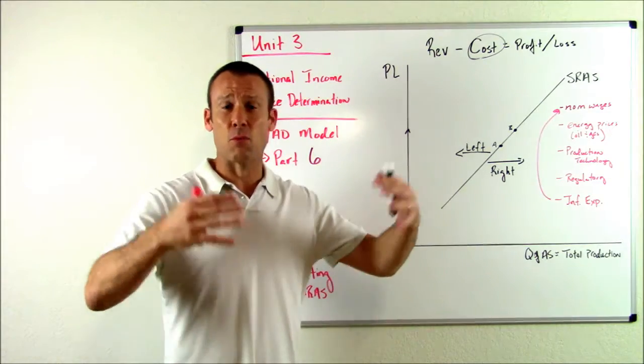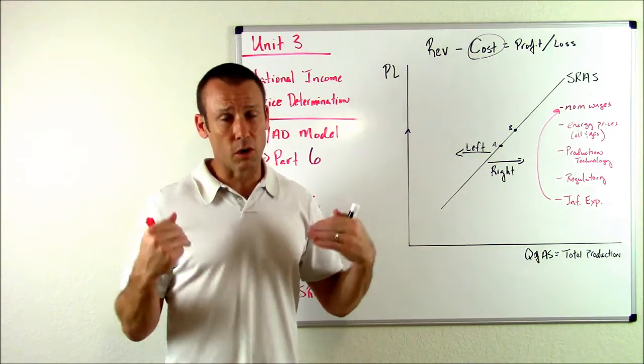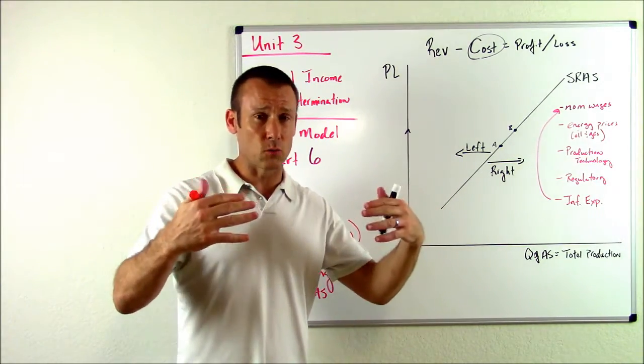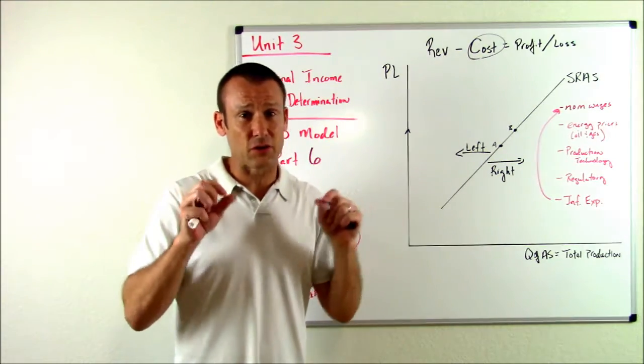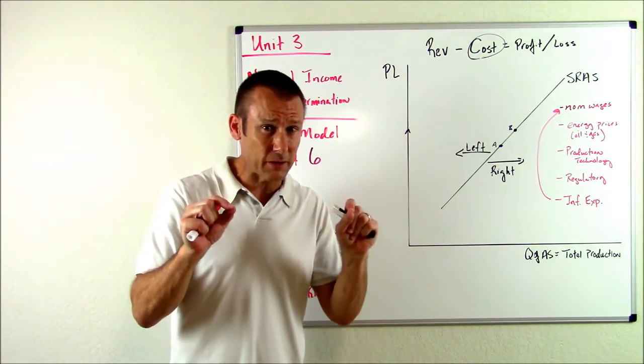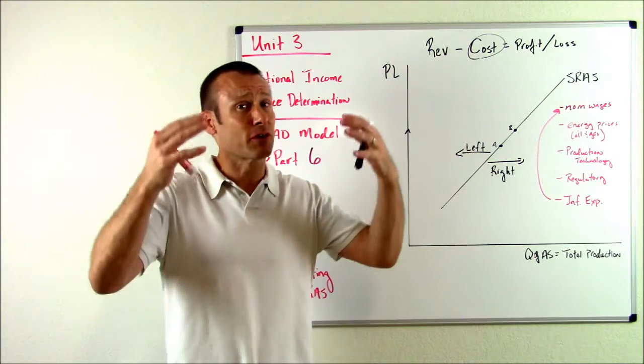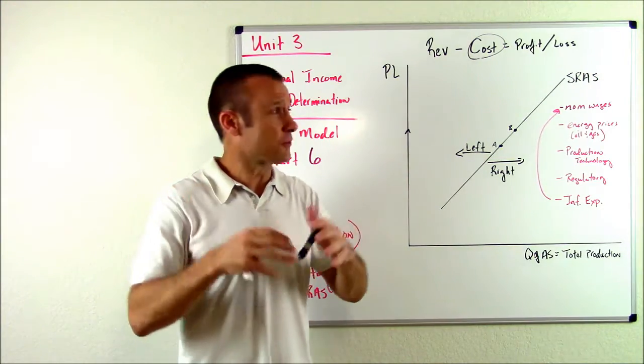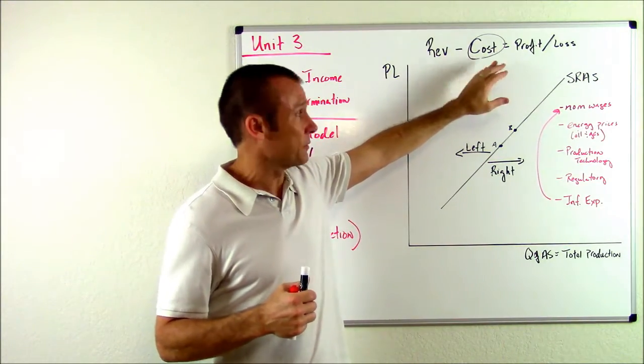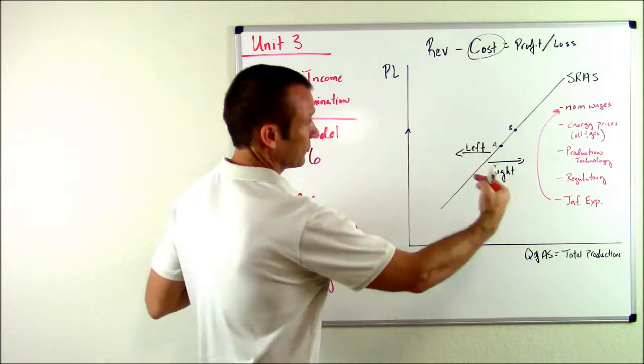workers are going to agitate for higher wages. And when they agitate for higher wages, trying to keep their real wage the same, then nominal wages are going to go up. And when nominal wages go up, that's an increase in cost of production, SRAS shifting left.